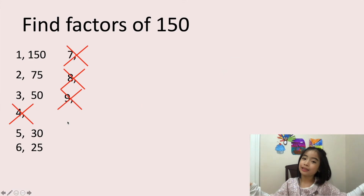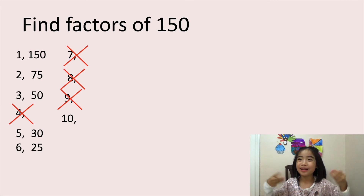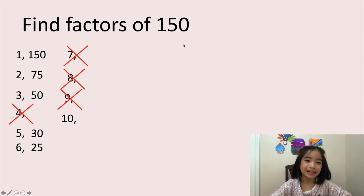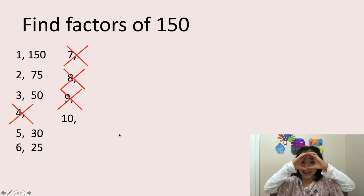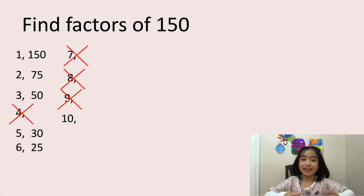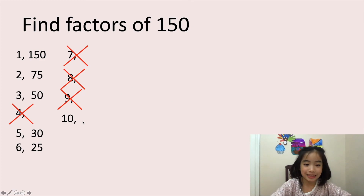Now, is 10 a factor of 150? Well, we know that you only need to add a 0 at the end of the number when multiplying by 10. So if we have 15 times 10, we just add a 0 at the end and we get 150. So 150 is definitely divisible by 10. Let's write 15 here.